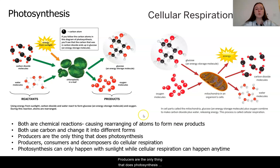Producers are the only thing that does photosynthesis, whereas all living things do cellular respiration. Photosynthesis can only happen with sunlight. It needs that energy, as we saw when we turn the sun off, it stops happening, so it cannot happen at night.